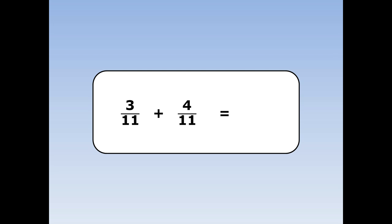3 elevenths plus 4 elevenths. We add the numbers on the top together, and the bottom number stays the same. 3 plus 4 is 7, and the 11 stays the same.